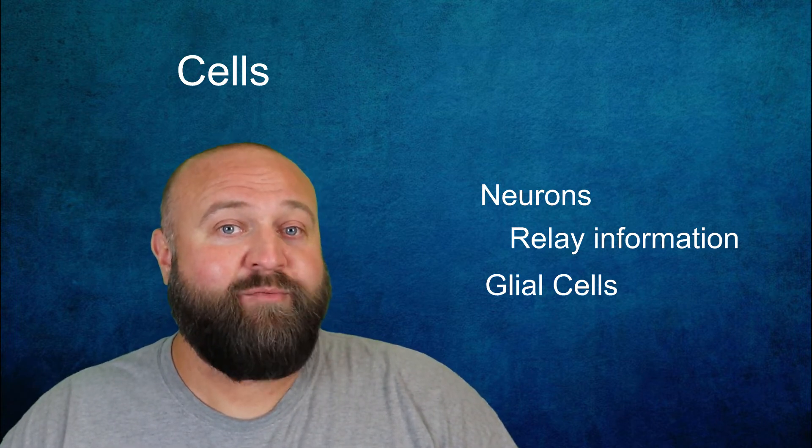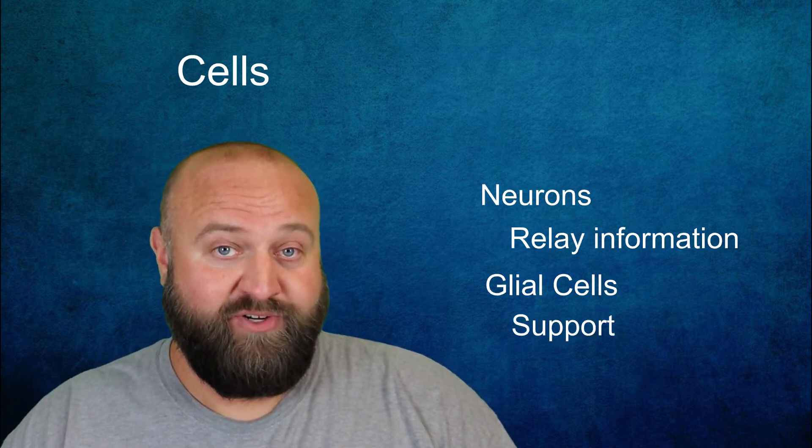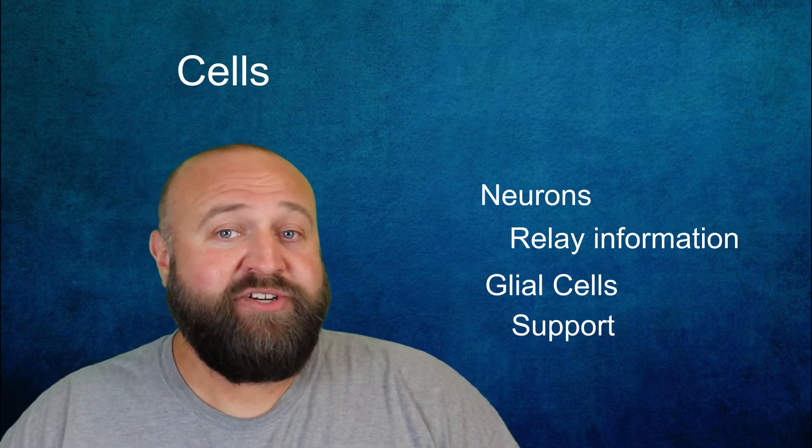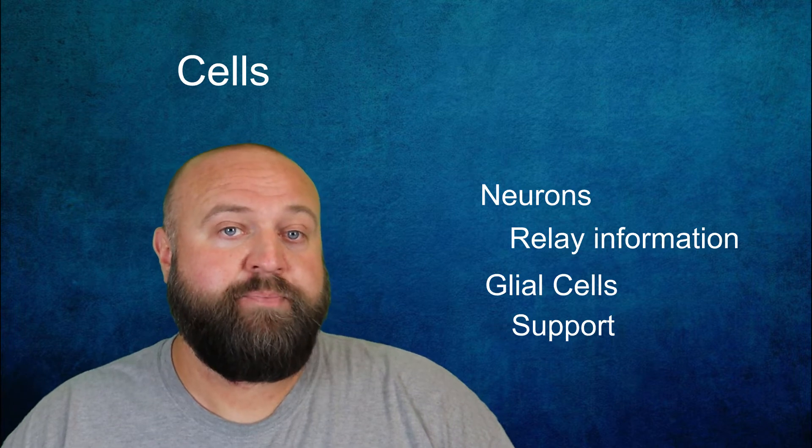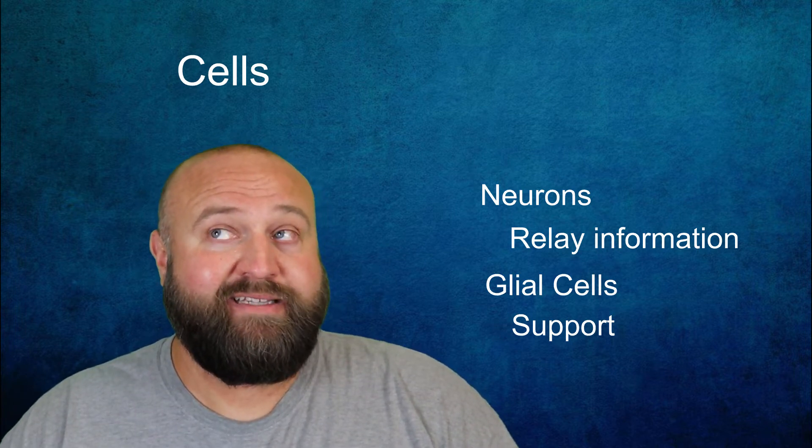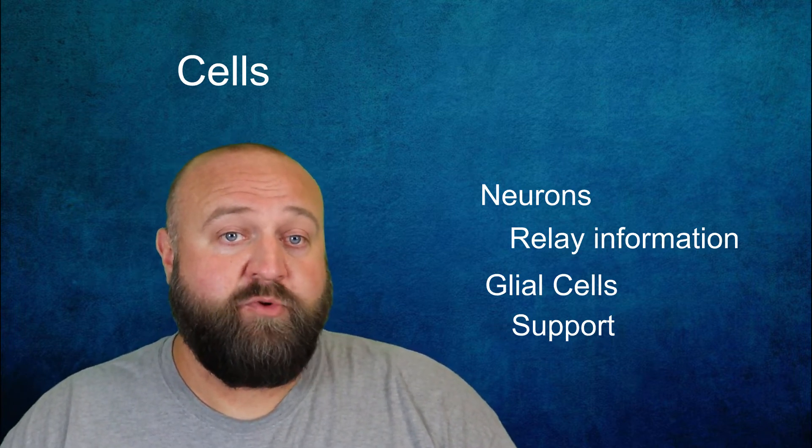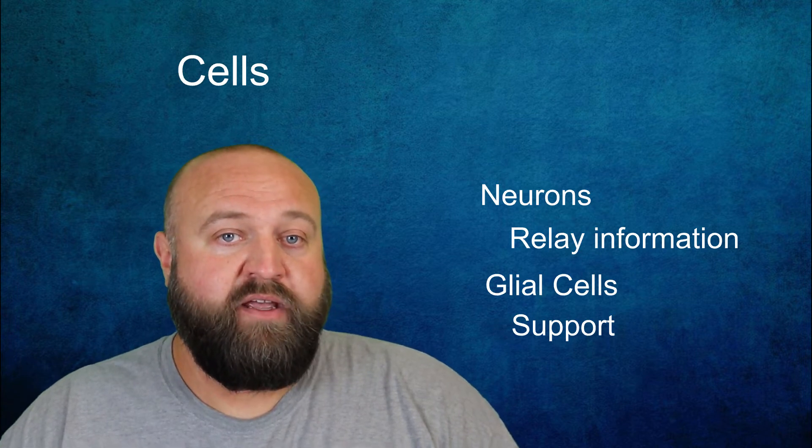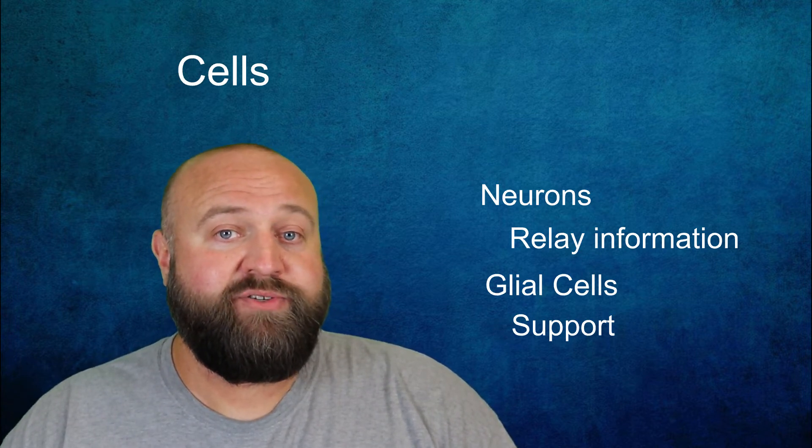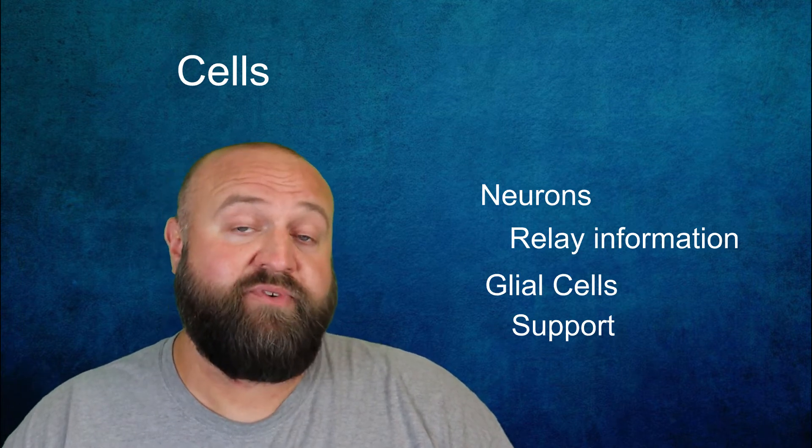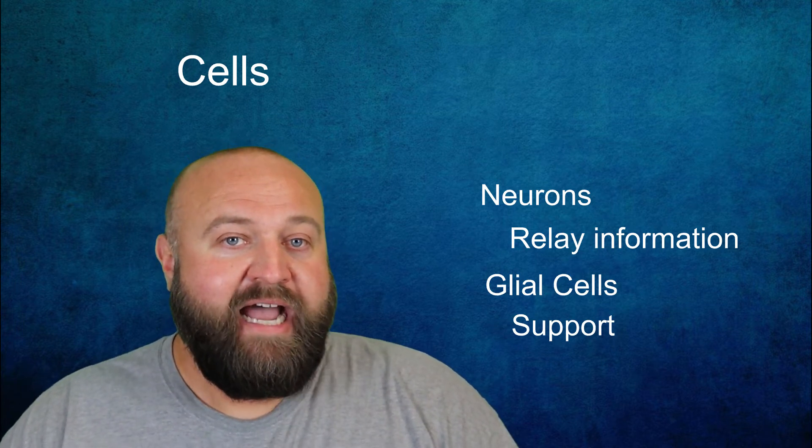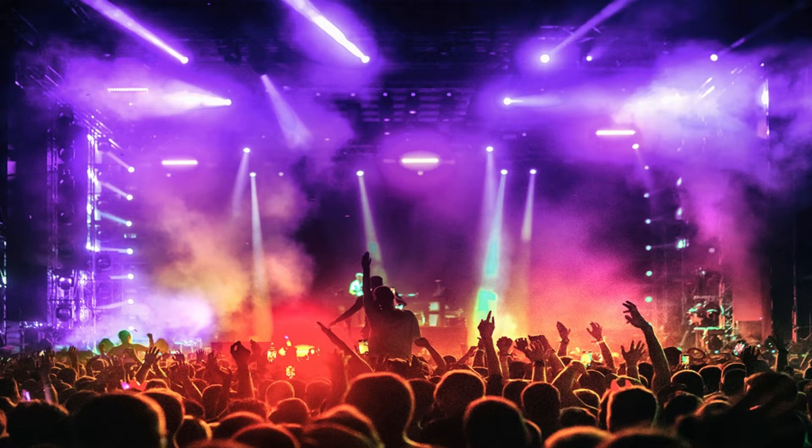Glial cells have more of a supportive role to neurons. There are specialized glial cells that help provide support and protection to the nervous system. Some even work almost like the garbage men of the nervous system removing waste products. You even have some that work to help insulate the neurons so that they are better able to work in the most efficient way possible. I like to think of glial cells as being like the backup dancers and neurons are like the rock stars.